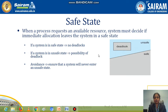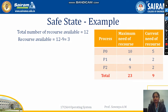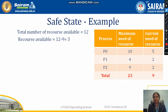For an example, consider we have three processes which each need a maximum amount of resources for execution, and a system which has 12 resources available. Based on the maximum need, we have current needs: P0 needs 10 resources maximum with a current need of 5, P1 has a current need of 1, and P2 has a current need of 2.